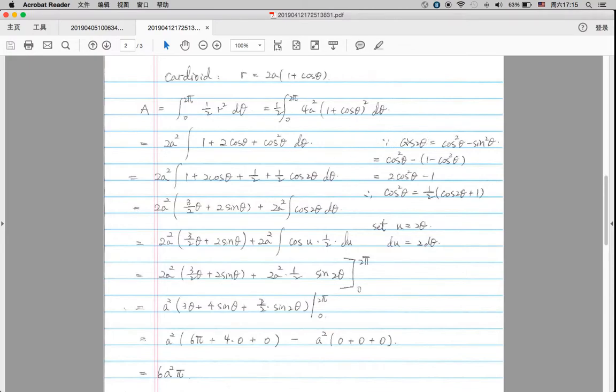So we have a formula: cosine 2 theta equals cosine squared theta minus sine squared theta. And since sine theta squared is also 1 minus cosine squared theta, so basically this is also equal to 2 cosine squared theta minus 1.